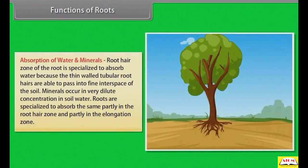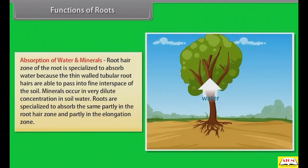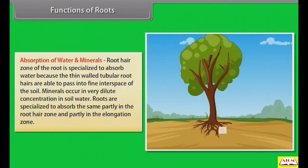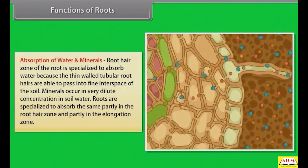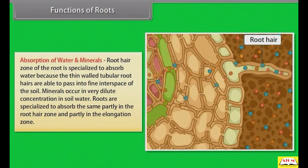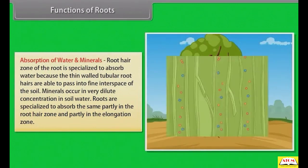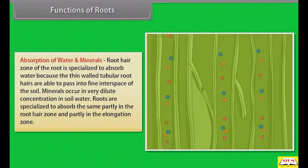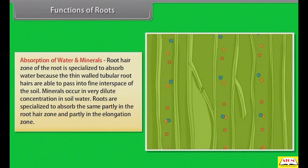The root hair zone of the root is specialized to absorb water because the thin-walled tubular root hairs are able to pass into fine interspaces of the soil. Minerals occur in very dilute concentration in soil water; roots are specialized to absorb them partly in the root hair zone and partly in the elongation zone.